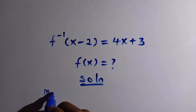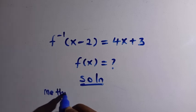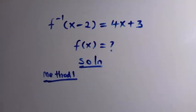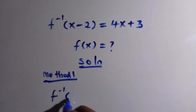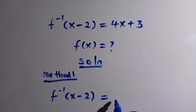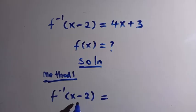For Method 1, we are going to apply form manipulation. From the given equation, we have f inverse of x minus 2 equals 4x plus 3. At the domain we have x minus 2, and on the other side we have x plus 3.